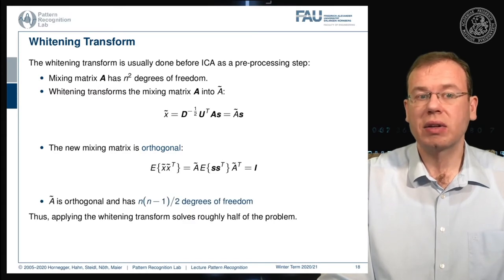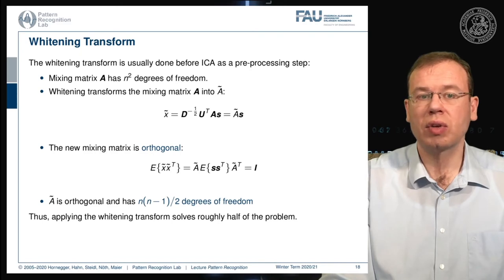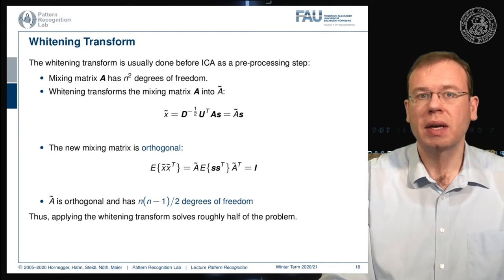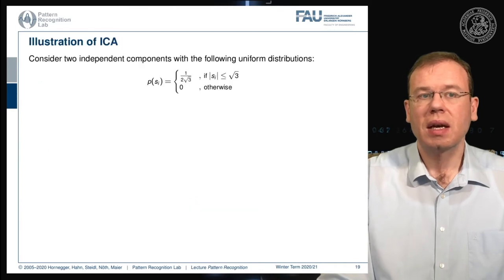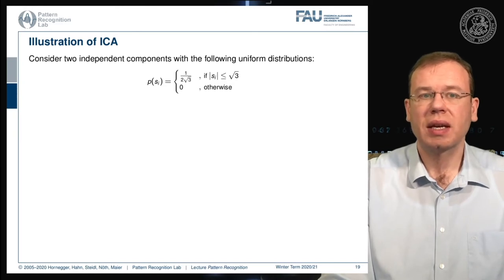A-tilde is orthogonal and has n(n−1)/2 degrees of freedom. Thus applying the whitening transform already solves half of the problem — we can simplify the problem and get a step closer to our solution.